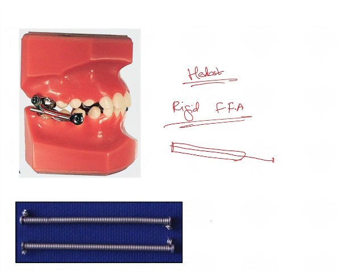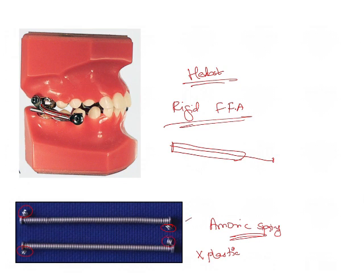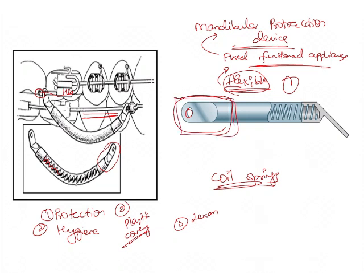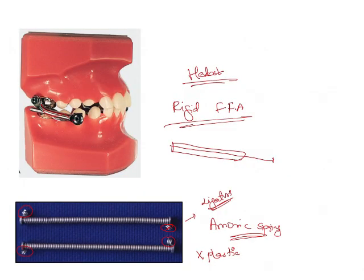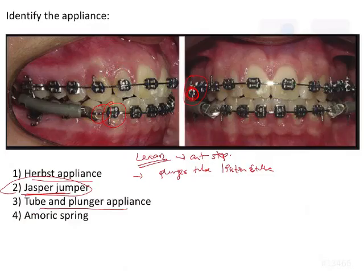Amoric springs, although flexible and coil-based like the Jasper Jumper, do not have any plastic covering. These springs consist of rings, which are used to hold the appliance in place — the ligature is tied over these rings and the arch wire. This is in contrast to the Jasper Jumper, which has a stainless steel end cap with a hole. Knowing the characteristic features of each appliance allows us to easily identify them.